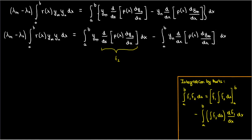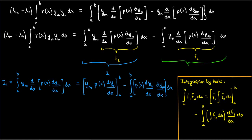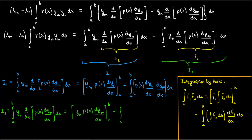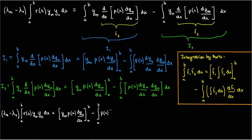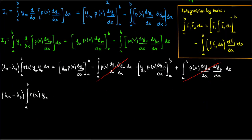For the first integral, I'll choose my second function in integration by parts to be the derivative of p(x) times dy_m/dx. Evaluating it — I'll call it I₁ — I get y_n times p(x) times dy_m/dx, minus the integral of p(x) times dy_m/dx times dy_n/dx. We evaluate the second integral I₂ in the same way. Putting them back into our equation, the integral terms on the right-hand side cancel out, which simplifies things considerably.